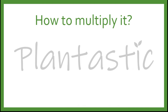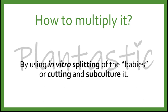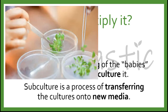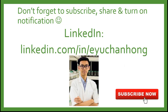How do we multiply the plants? By using in vitro splitting of plantlets or cuttings, we can subculture them. In vitro refers to the aseptic condition requiring specific facilities. Subculture is the process of transferring cultures onto new media. Don't forget to subscribe, share, and hit the notification button for subsequent videos on plant science. You may also find me on LinkedIn. Thank you for watching and have a nice day.